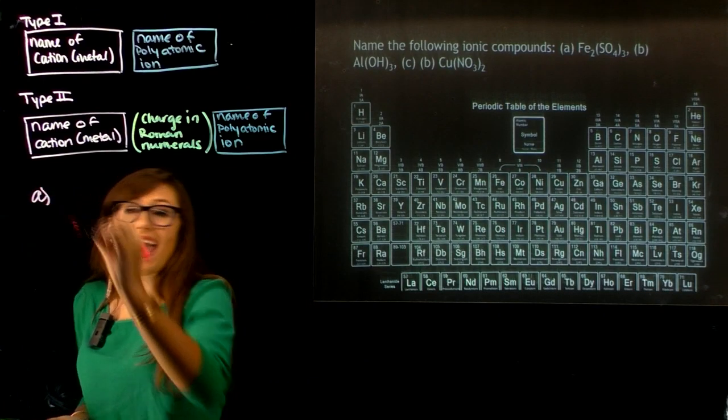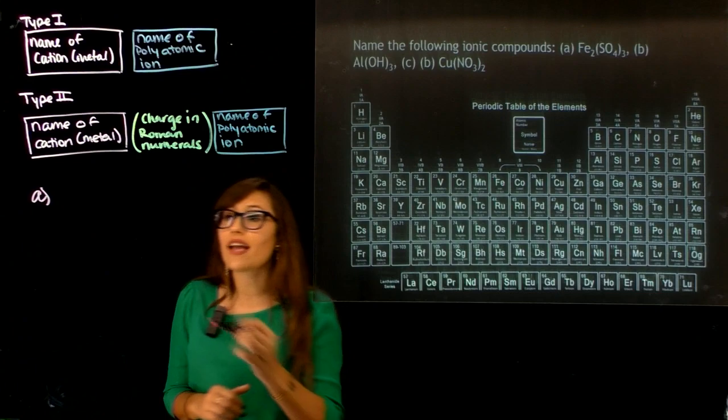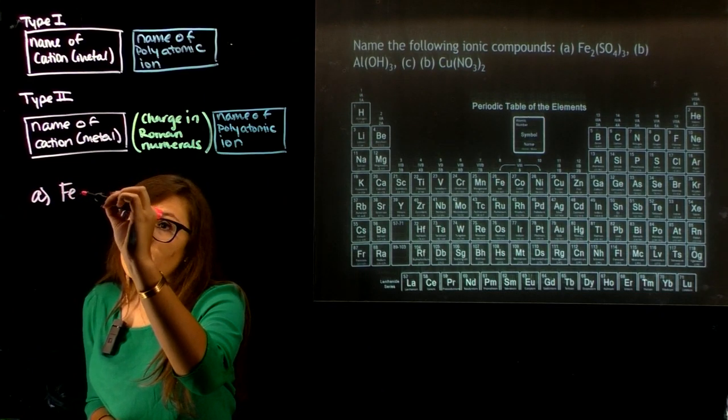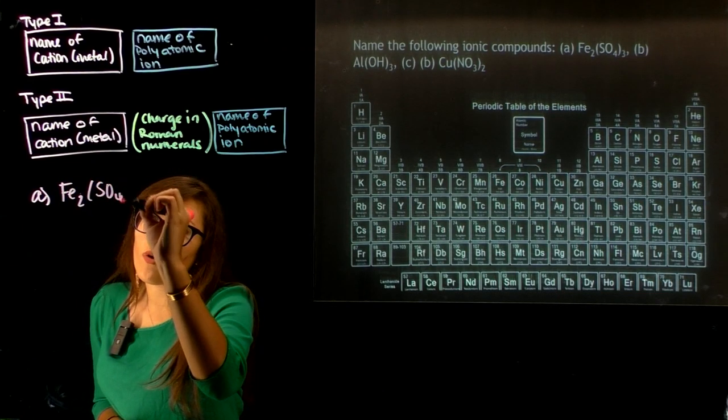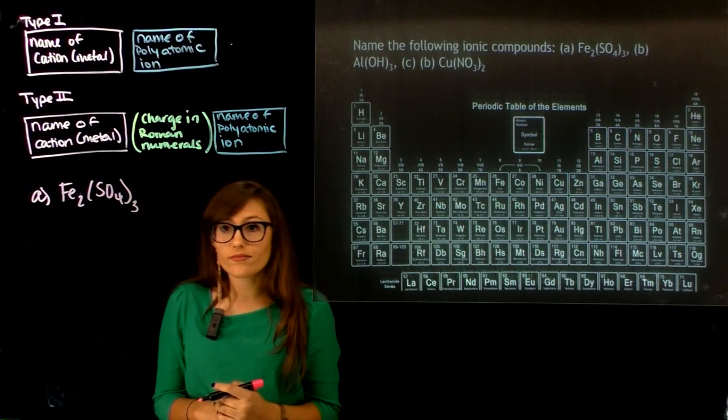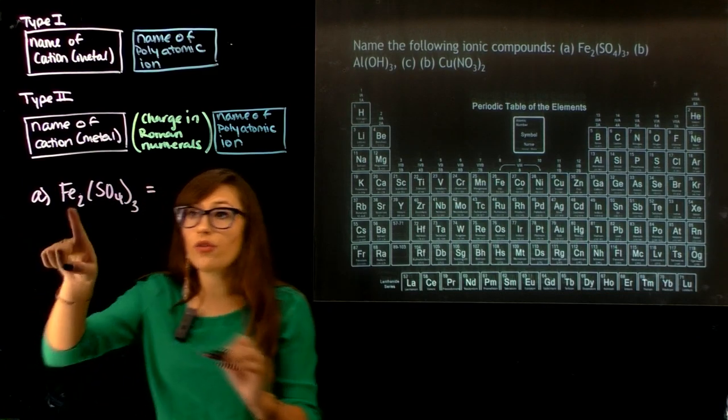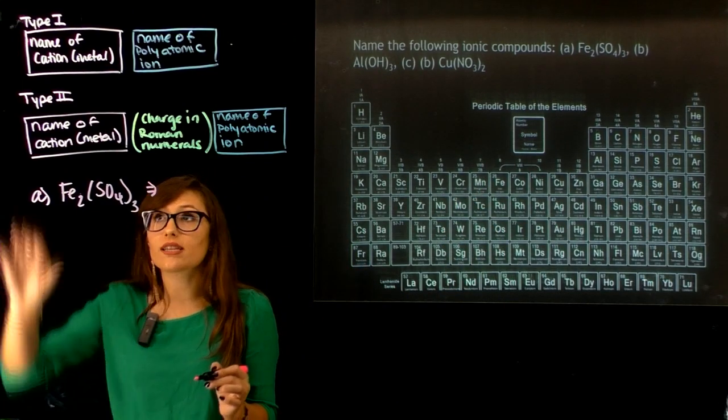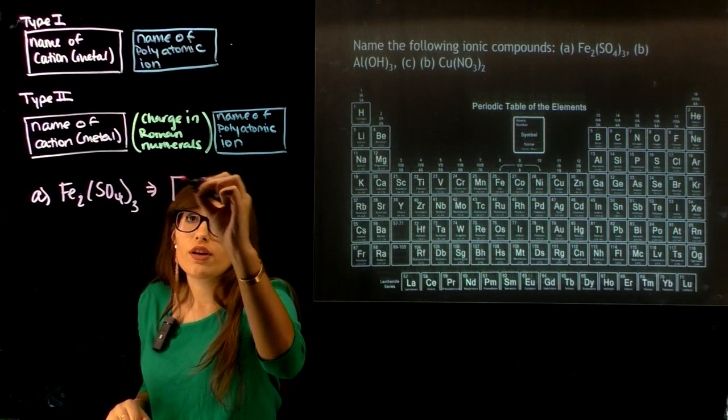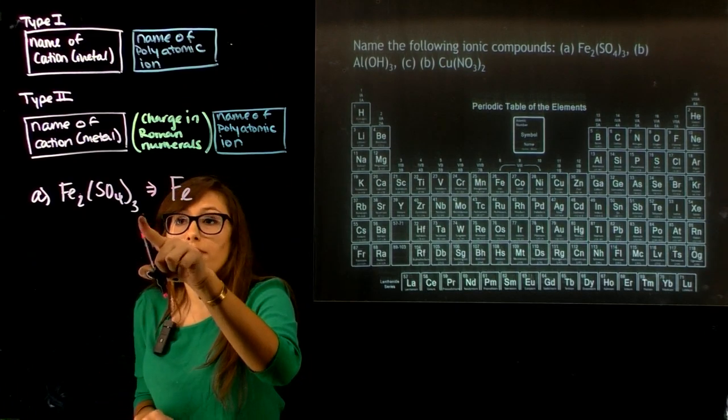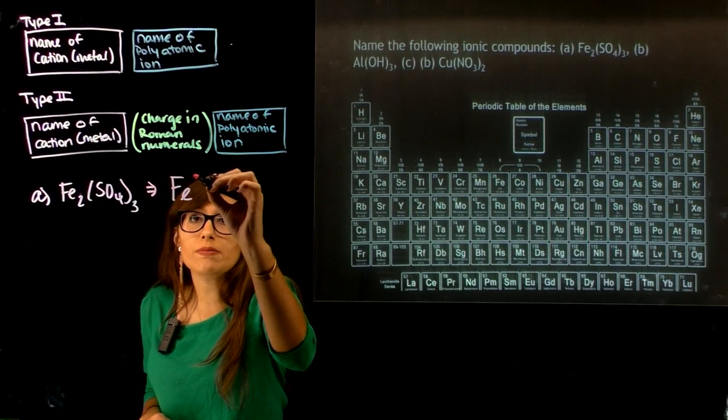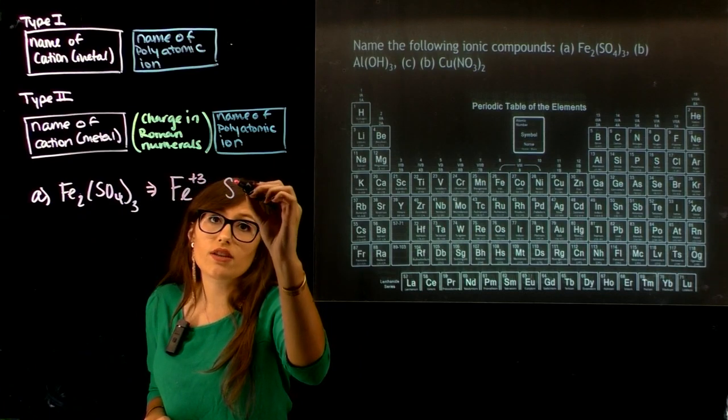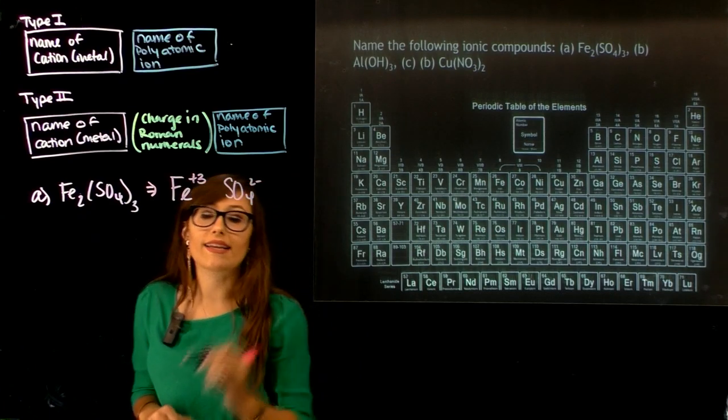So let's go ahead and do A. For A, it's Fe₂(SO₄)₃. Before we can name this, we know that iron is a transition metal, so we're going to be naming this in the Type 2 format. We bring up the subscripts. So this is iron 3+ and SO₄ 2-.